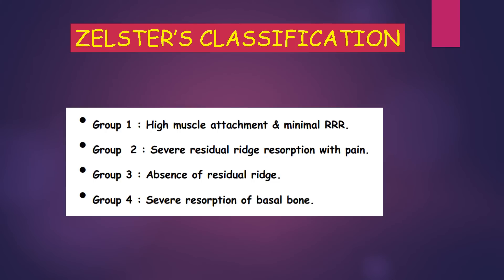Next is Stelster's classification. He classified residual resorption into Groups 1 to 4. In Group 1, high muscle attachment and minimal residual resorption. In Group 2, severe residual resorption with pain. Group 3, absence of residual resorption. And Group 4, severe resorption of basal bone.